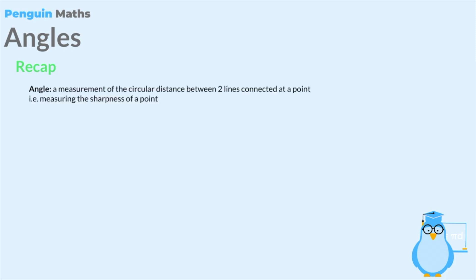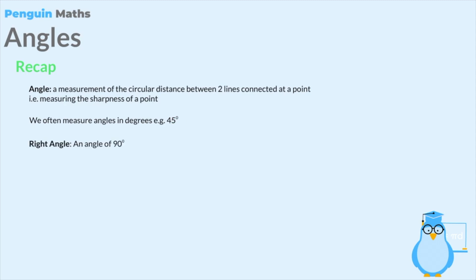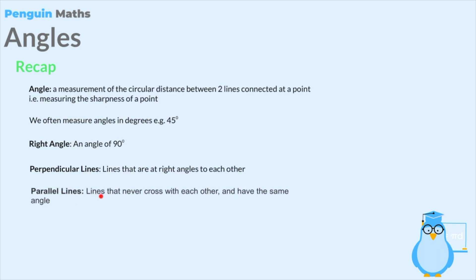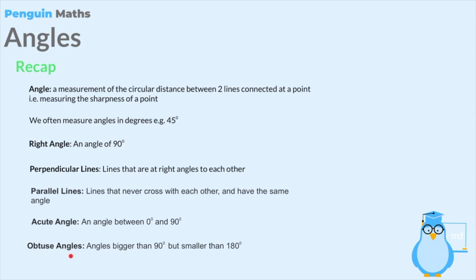To summarize everything from this lesson: an angle is a measurement of the circular distance between two lines connected at a point, or in other words the sharpness of a point. We measure angles in degrees, symbolized by a small circle. A right angle is 90 degrees. Perpendicular lines are lines at right angles - 90 degrees - to one another. Parallel lines are lines that never cross and have the same angle. Acute angles are between 0 and 90 degrees, and obtuse angles are bigger than 90 degrees but smaller than 180 degrees.